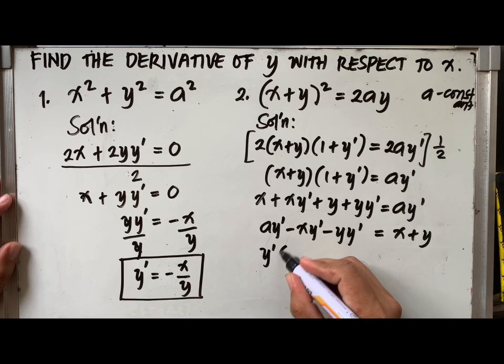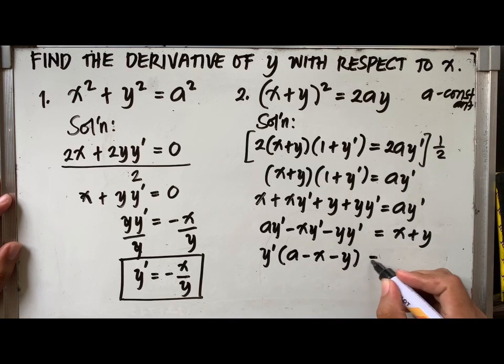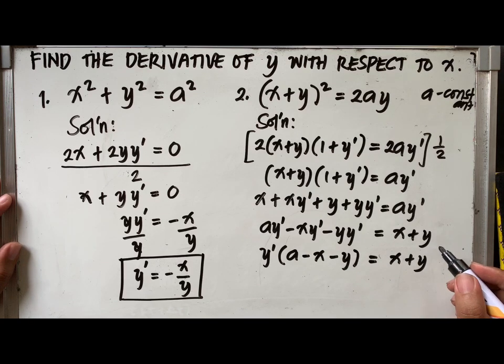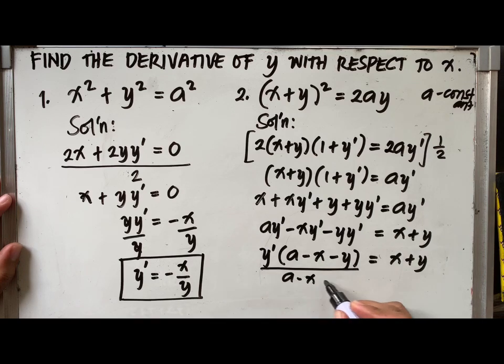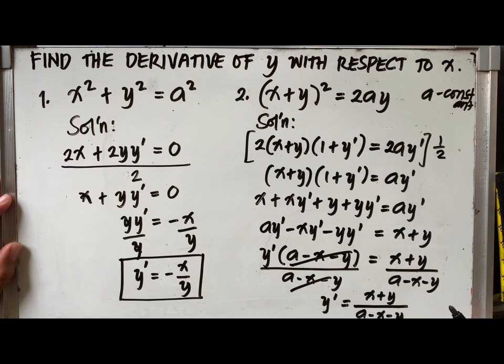Now, I have a y prime minus x y prime minus y y prime equal to x plus y. Since, at the left side of the equation, y prime is common in each term, I will now factor out y prime, giving me y prime times the quantity a minus x minus y equal to x plus y. Now, to solve for y prime, I will now divide both sides of the equation by a minus x minus y, giving me the final answer. y prime is equal to x plus y over a minus x minus y.